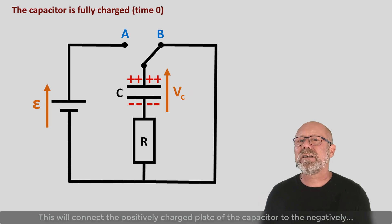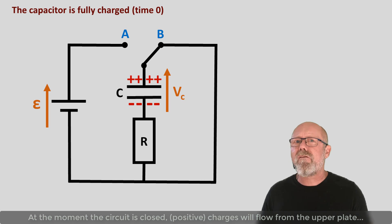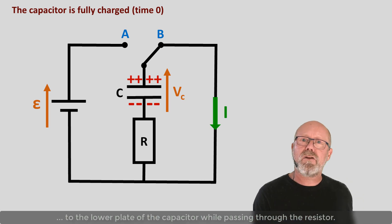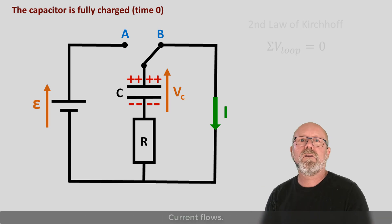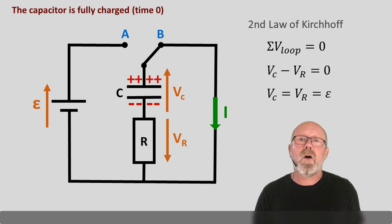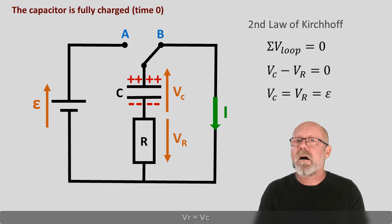What do you think will happen when we flip the switch to position B? This will connect the positively charged plate of the capacitor to the negatively charged plate with the resistor R in between. At the moment the circuit is closed, charges will flow from the upper plate to the lower plate of the capacitor while passing through the resistor. Current flows. According to the second law of Kirchhoff, the potential drop through the resistor will always be equal to the voltage across the capacitor. VR equals VC.